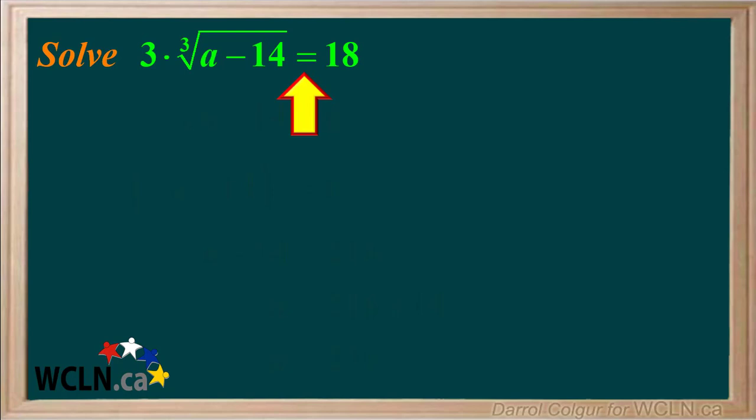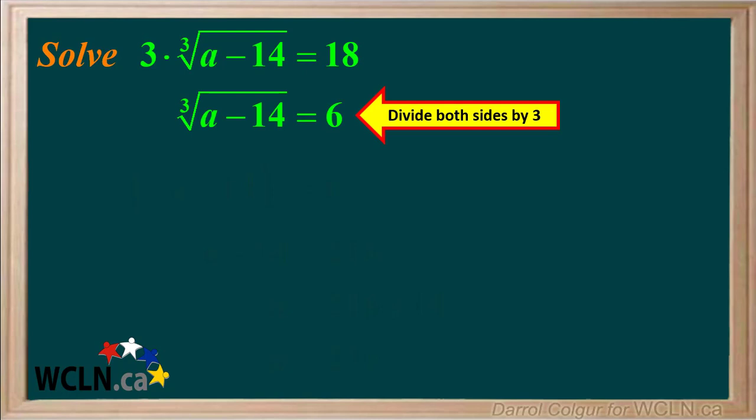The first thing we need to do is isolate the radical by dividing both sides of the equation by 3. After dividing both sides by 3, we have the cube root radical isolated.